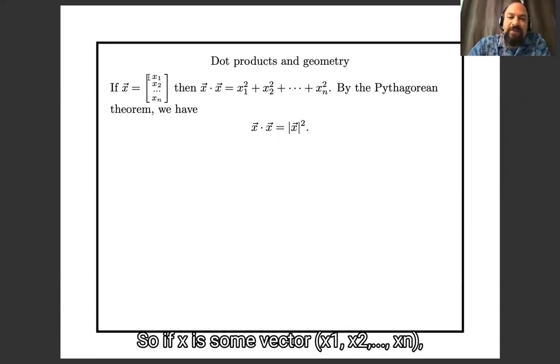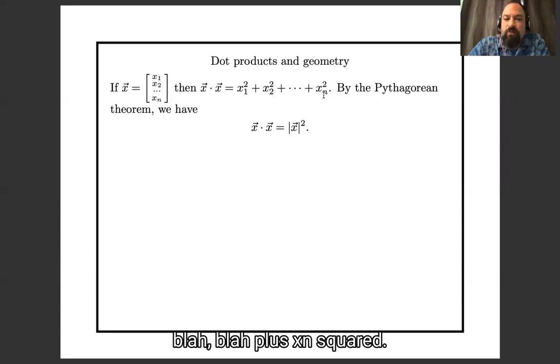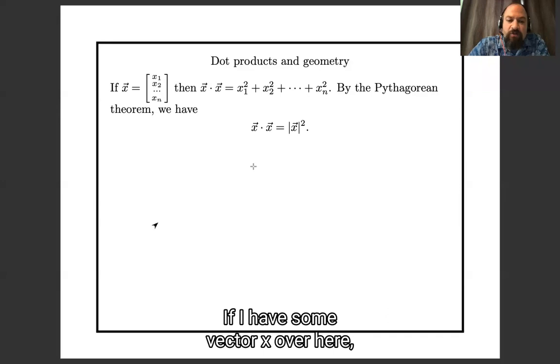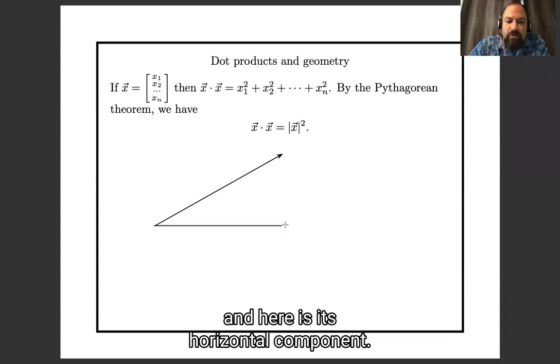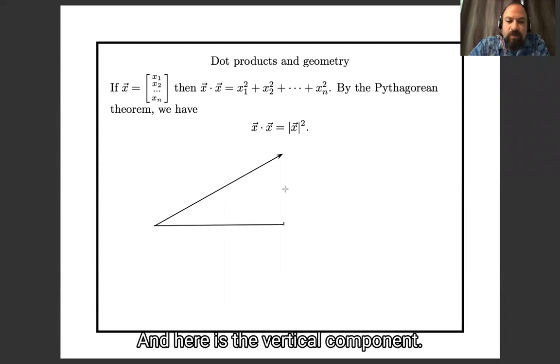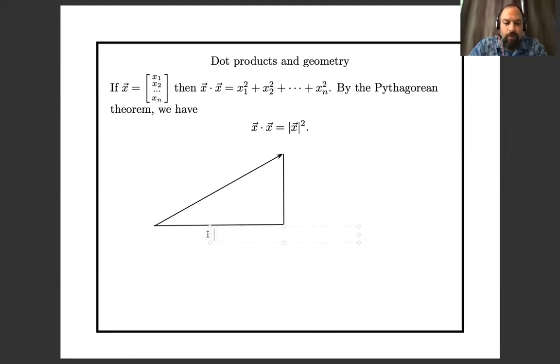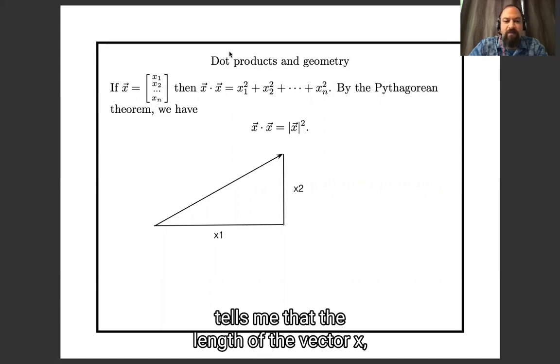So, if x is some vector x1, x2, xn, then when I dot x with itself, I get x1 squared plus x2 squared plus et cetera plus xn squared. And by the Pythagorean theorem, that's exactly the square of the length of the vector x. Right, if I have some vector x over here, and here is its horizontal component, and here is its vertical component,